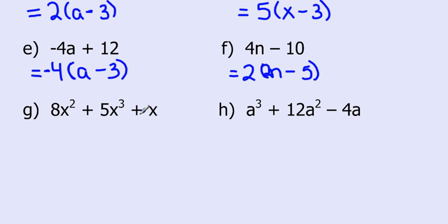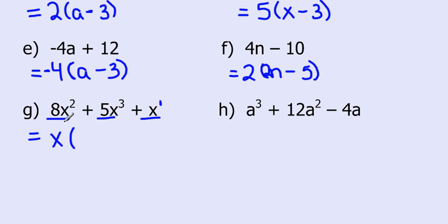For 8x squared plus 5x cubed plus x: I want to find the greatest common factor I can take out of each term. There's definitely not a number I can take out of each. I have 2 x's here, 3 x's here, and only 1 here, so the greatest common factor is just x. Dividing each term: 8x squared divided by x gives 8x, 5x cubed divided by x gives 5x squared, and x divided by x gives 1.